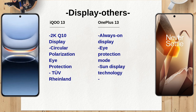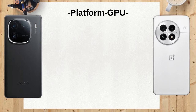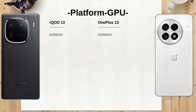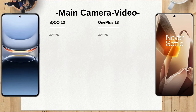The higher refresh rate of the iQO13 may appeal to gamers and those seeking smoother scrolling experiences. The iQO13 boasts advanced display features such as two Rhineland certifications for eye protection and circular polarization technology, enhancing user comfort during prolonged use. The OnePlus 13, in contrast, includes always-on display capabilities and sun display technology, which can be beneficial for outdoor visibility.